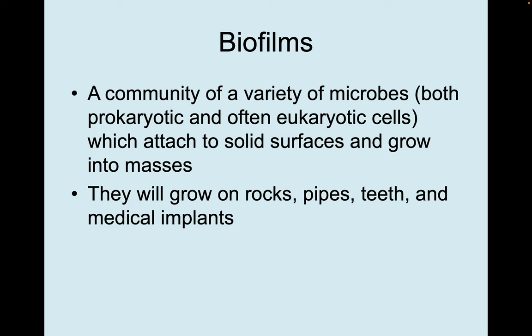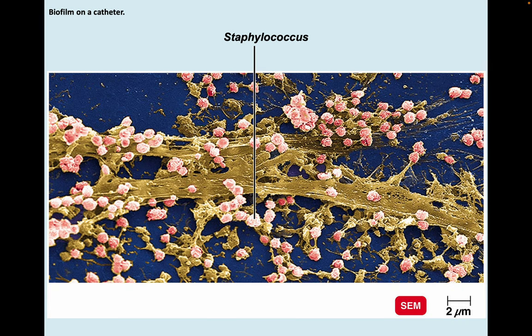Another special structure of bacteria is biofilms — a community of a variety of microbes, both prokaryotic and often eukaryotic cells, which attach to solid surfaces and grow into masses. Biofilms grow on rocks, pipes, teeth, and medical implants. Here's an example from a scanning electron micrograph — a staphylococcus biofilm on a catheter.